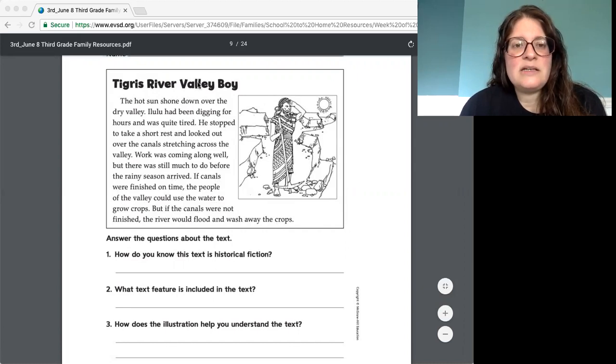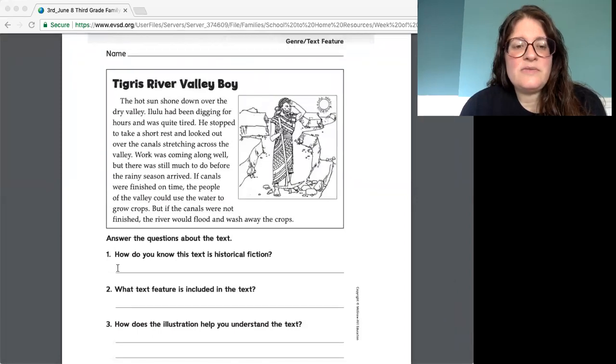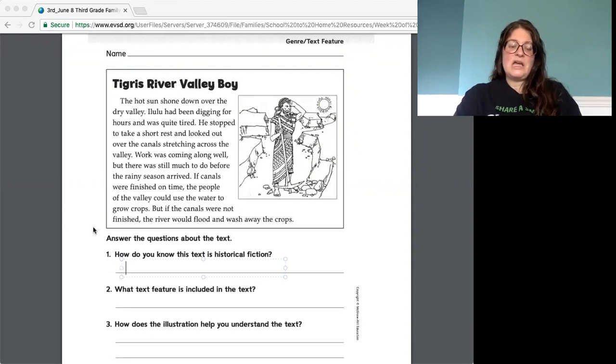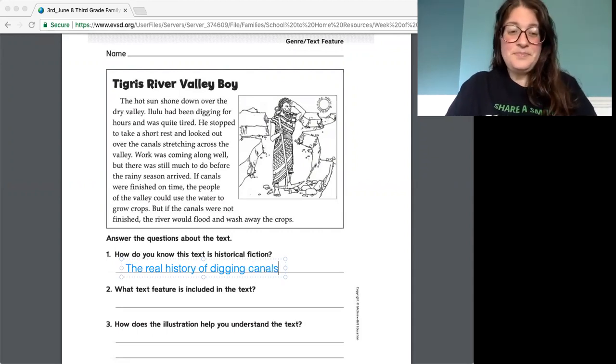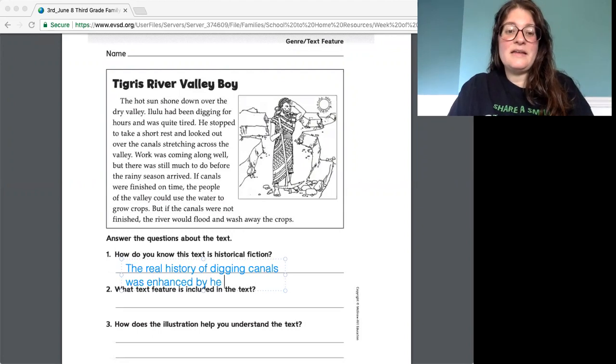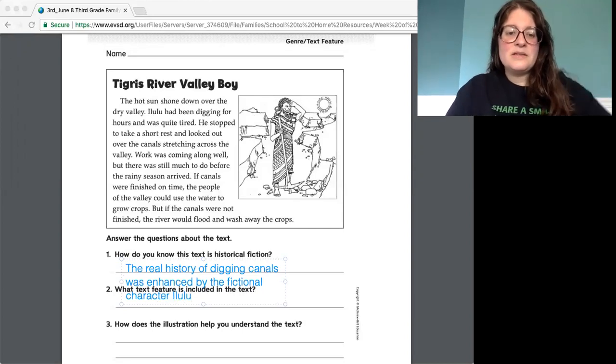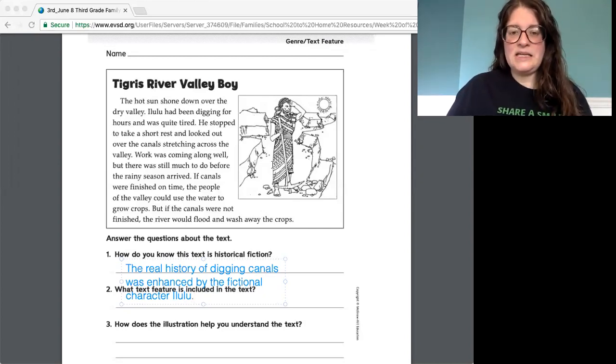Okay so how do we know it's a historical fiction? Well it happens for something that really happened in history. So I might say the real history of digging canals was enhanced by the fictional character, Ilulu. So this person didn't actually exist, that's the fiction part, but the work of actually digging canals really did happen. So that's how then I know it's a historical fiction. So I'm gonna get rid of that so you can see the next thing here.